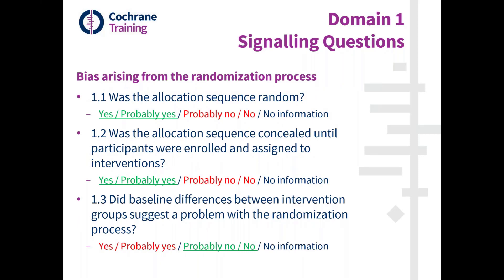This is the domain — it has three questions. The first two questions ask directly about the main two processes: generating a truly random sequence, and concealing this sequence until participants are irreversibly enrolled into the trial. Those two are familiar — this is similar to what you had in the original ROB tool for those who have used it.